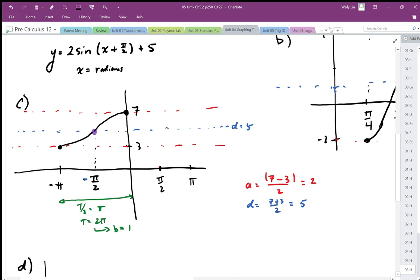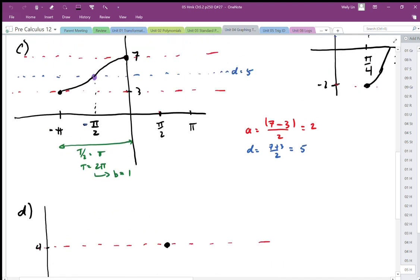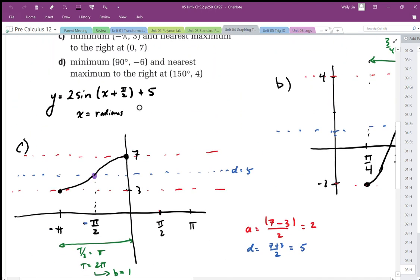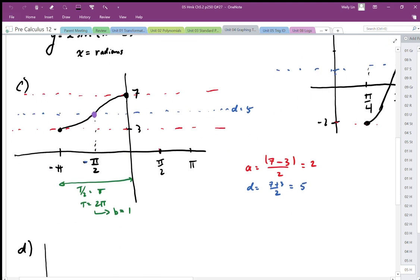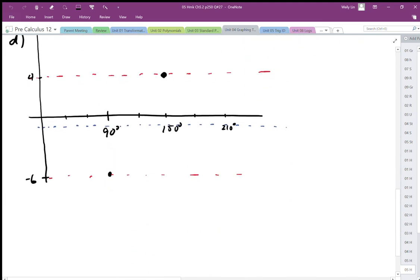Because the next question here, if we take a look at this one, this one's going to be in degrees, because they tell us, they give us a minimum point at 90 and negative 6. And the next maximum to the right is at 150 degrees and 4. So that's what it looks like. So if I were to sketch this in,